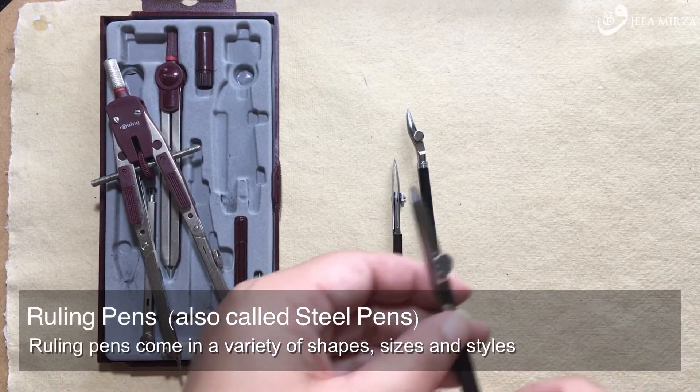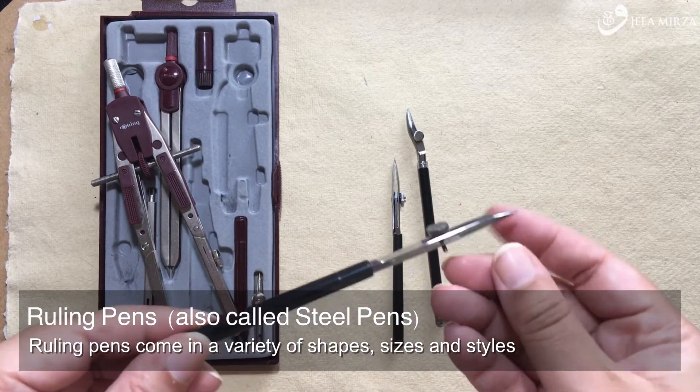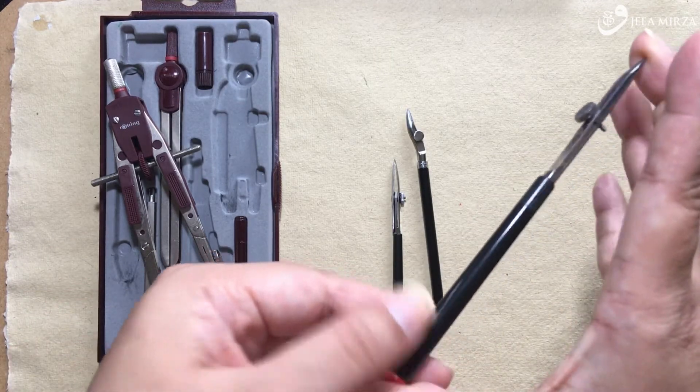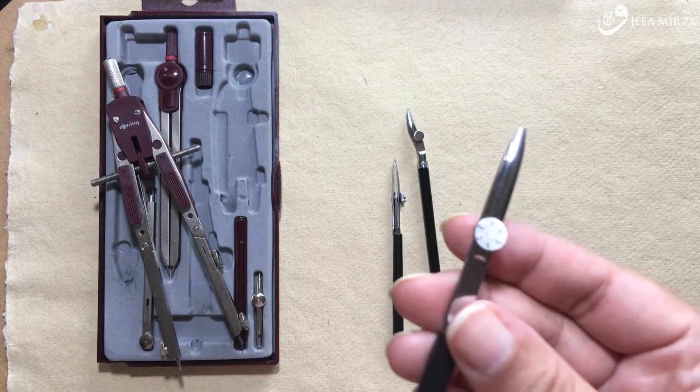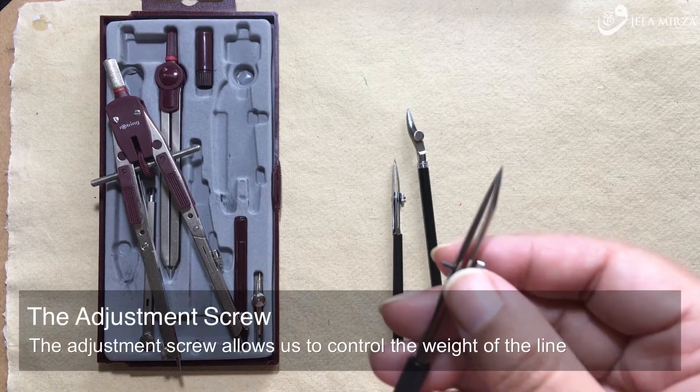Let's have a look at the ruling pens a bit more closely. They're also called steel pens, and they come in a variety of different shapes, sizes and styles. The one I'm holding now is fairly standard. It's got two tapered arms coming to a fine point and you can see it's got this little adjustment wheel or screw on it.